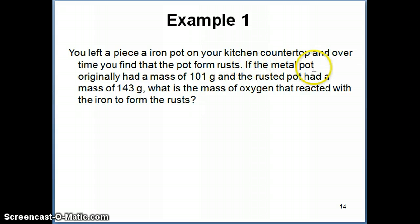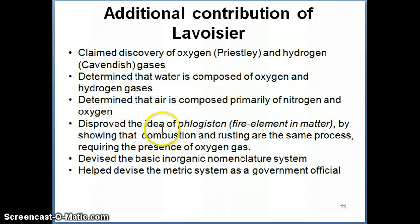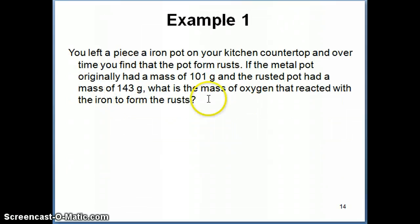Let's say you go ahead and weigh the pot. You know the masses of the pot before and after the rusting. So before rusting it was 101 grams when there's no rust present, and then the rusted pot had a mass of 143 grams. Based on the concept that we discussed in the previous video about rusting, we remember that one of the contributions of Lavoisier was that he showed that rusting is actually the same process like combustion, which is basically a reaction in the presence of oxygen gas. So in this case, we have a reaction where iron is reacting with oxygen. So the question is, what is the mass of oxygen that reacted with the iron to form the rust?